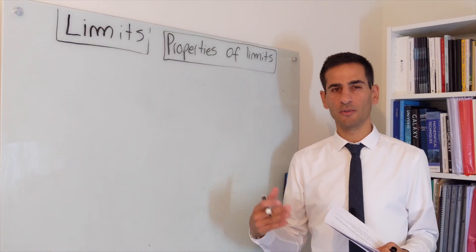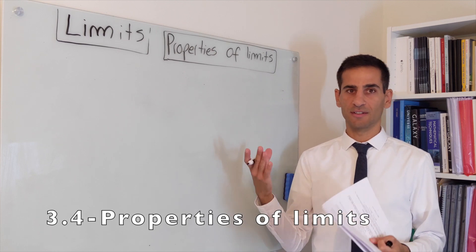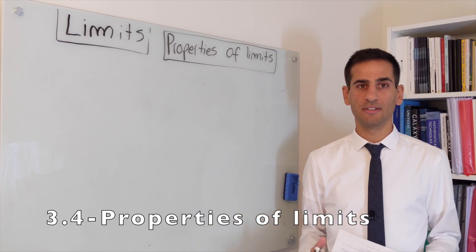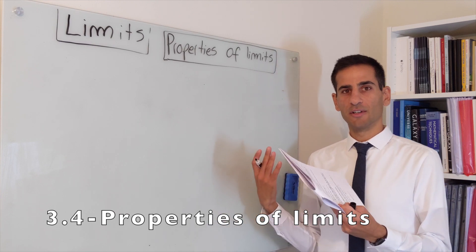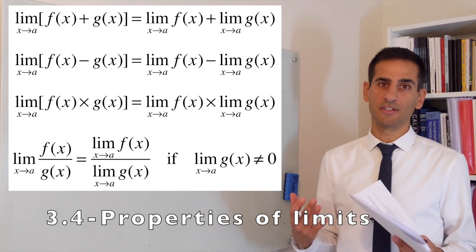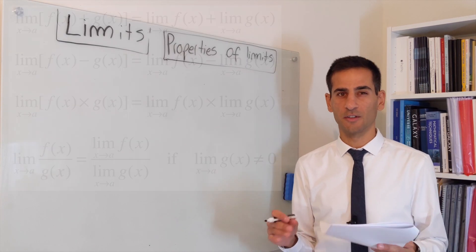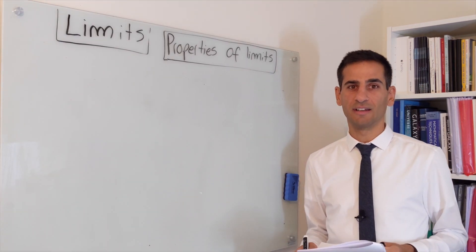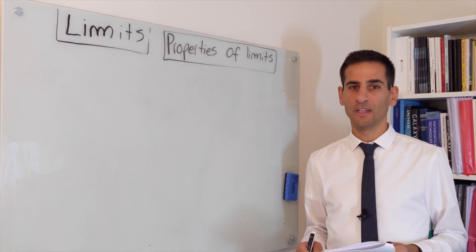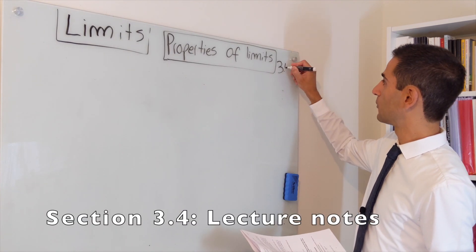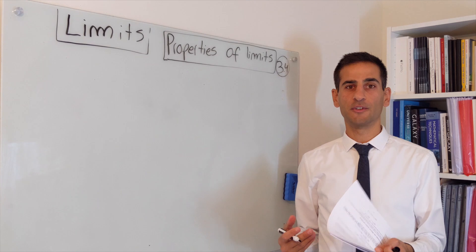Before we start solving limits systematically, we're going to define properties of limits. These are really important because if you're familiar with them you will be comfortable doing operations with limits, and you know that this is mathematically rigorous — so you won't hesitate thinking that maybe you're breaking mathematical laws. You can find these in section 3.4 in the lecture notes and you should be able to refer to that whenever you're calculating a limit.